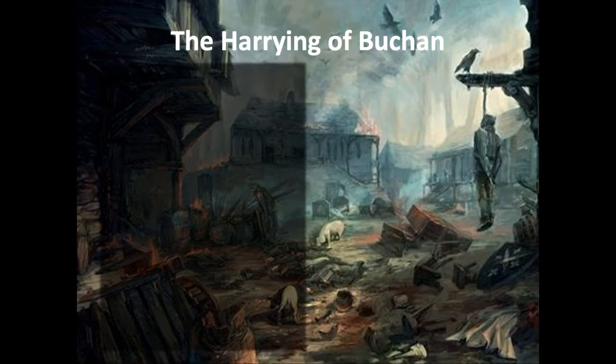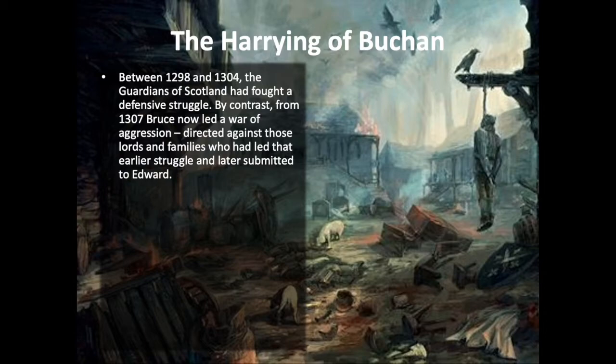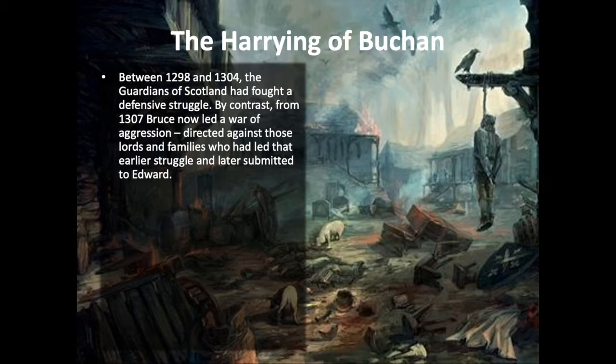The Harrying of Buchan. Between 1298 and 1304, the Guardians of Scotland had fought a defensive struggle, realising they didn't have the field army to meet continual English invasions. They fought with guerrilla tactics, falling back in the face of advance and allowing the English to ravage lands, knowing the English would go home for the winter and give the Scots a chance to regenerate. By contrast, in 1307, Bruce had turned the tide. He was now leading a war of aggression directed against those lords and families who had led that earlier struggle and later submitted to Edward — men who in Bruce's eyes were turncoats to the Scottish cause.